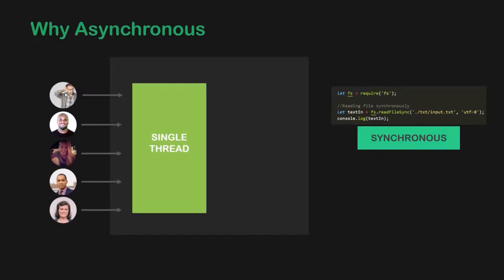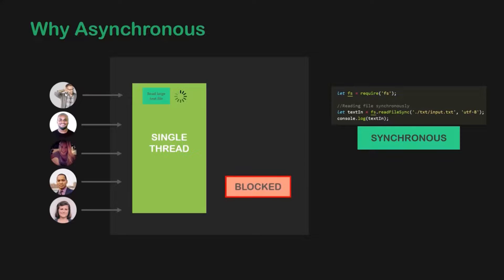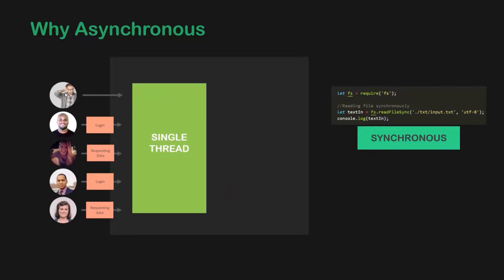When one user locks the single thread with synchronous code, all users will have to wait for that execution to finish. That might not be a huge problem with five users, but it's definitely a problem for thousands or millions of users. Imagine a user accesses your application and there is a huge synchronous file read that takes 10 seconds to load. For those 10 seconds, all users will have to wait because the entire execution is blocked. Users wanting to do simple tasks like login or request data won't be able to do so — they all have to wait until the file finishes reading.